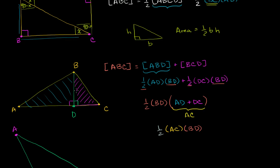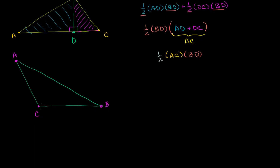It worked for right triangles. For a right triangle the height was one of the sides, but now for this arbitrary triangle it isn't — the height is the perpendicular dropped from a vertex. But if we know it, the area of any triangle is still one half times the base times the height. Now, what about a triangle like this — an obtuse triangle? Let's see if we can figure out its area the same way. We can drop a perpendicular from B, and where it hits the ground forms a right angle. Let's call this point D. We want to find the area of triangle ABC.